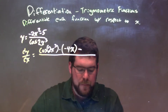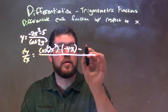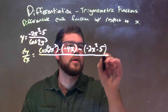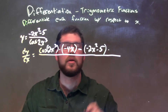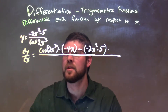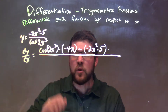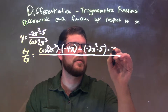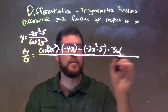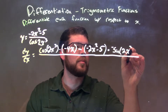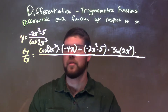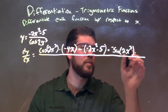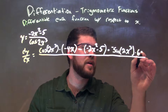Minus — we have to subtract the numerator, negative 2x squared minus 5, times the derivative of the denominator. This one's a little tricky because we're going to use the chain rule. The derivative of cosine is negative sine of 2x to the third power, and we multiply by the derivative of the inside, 2x to the third, which gives us 6x squared.